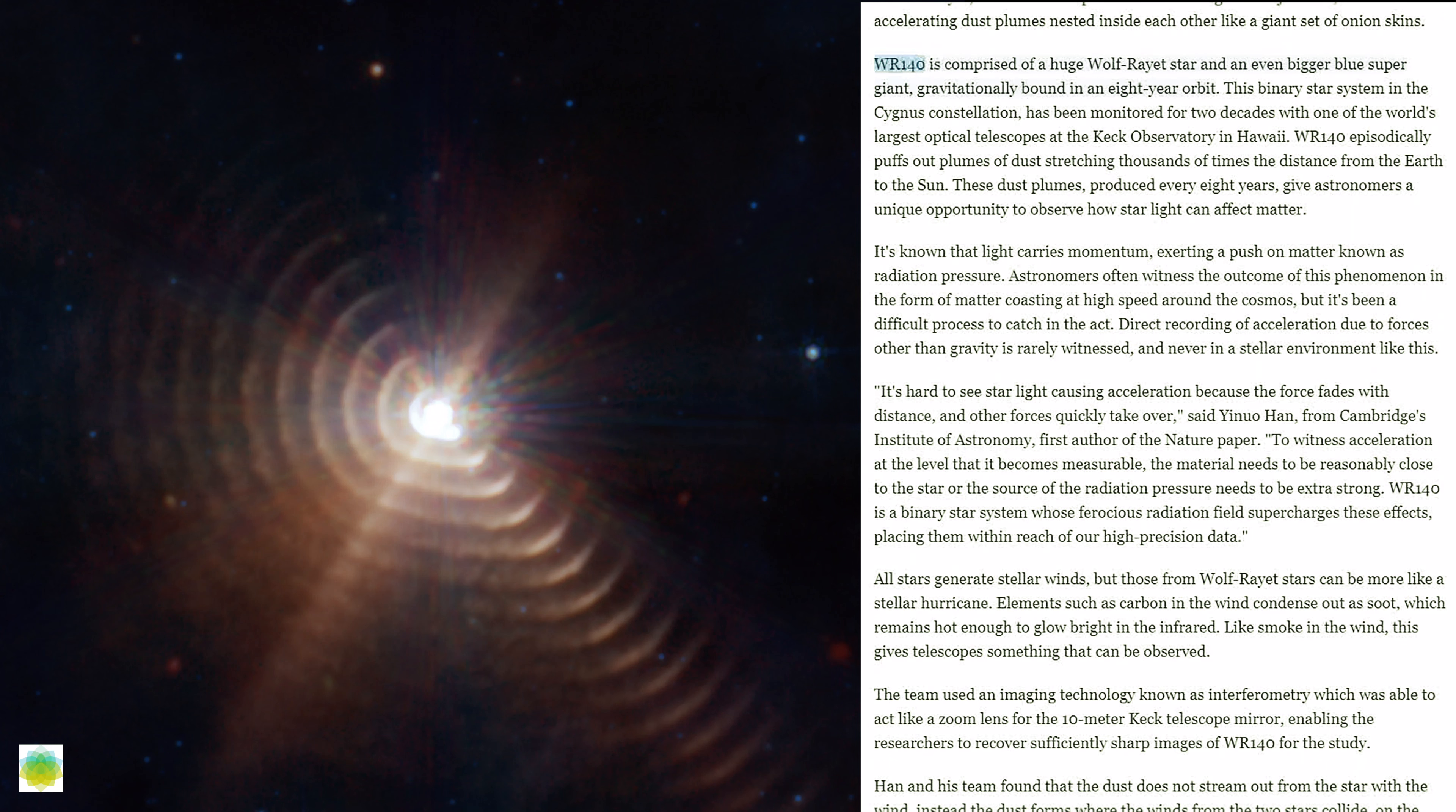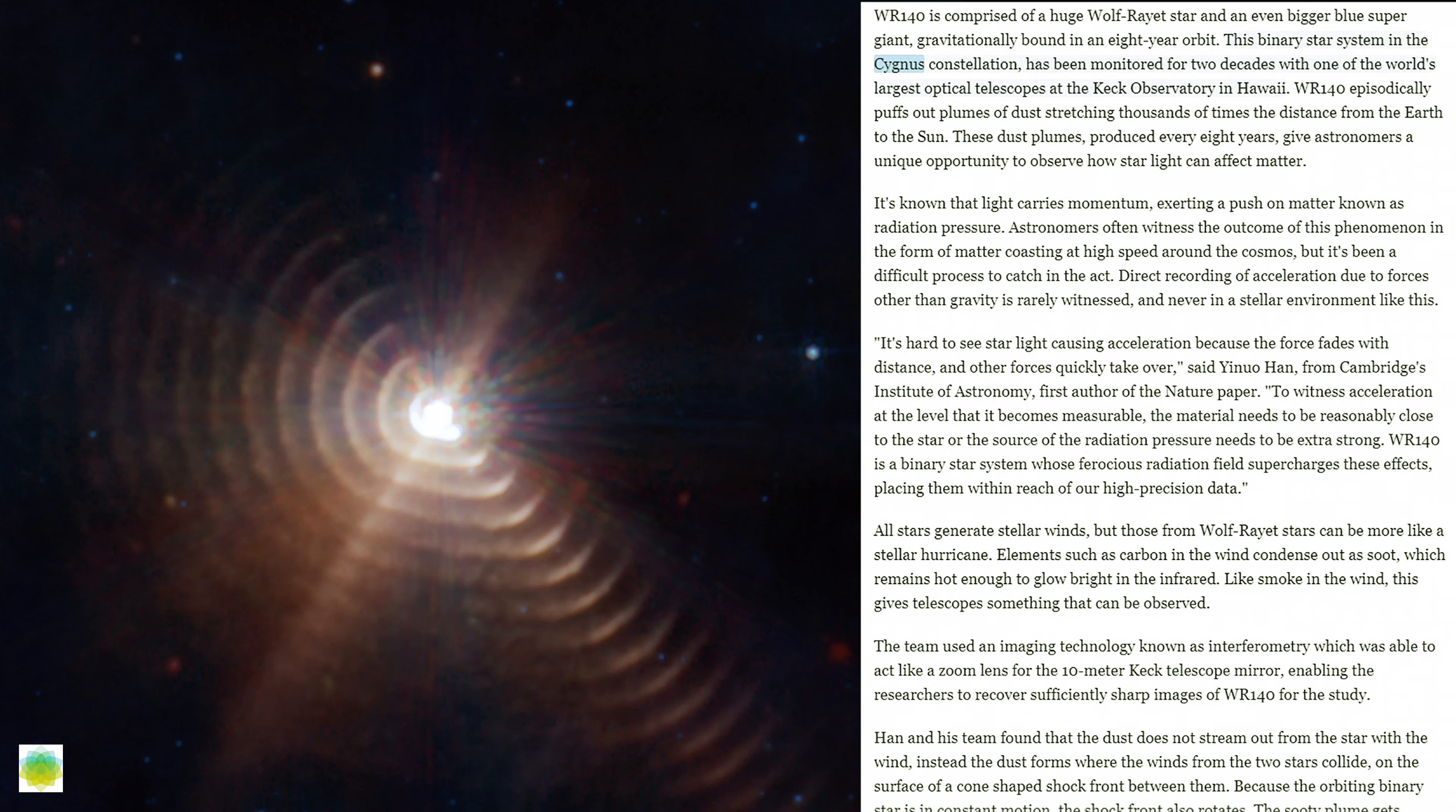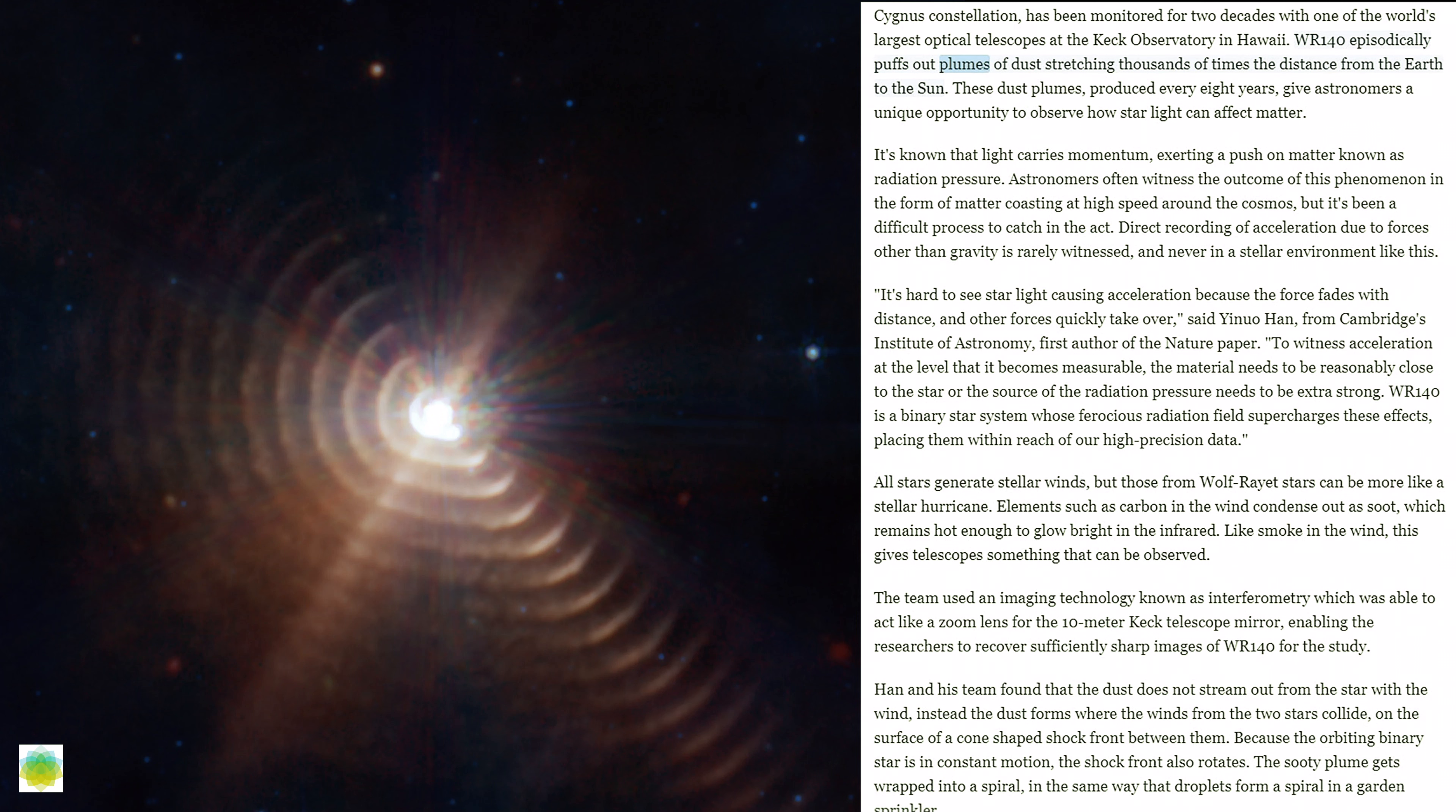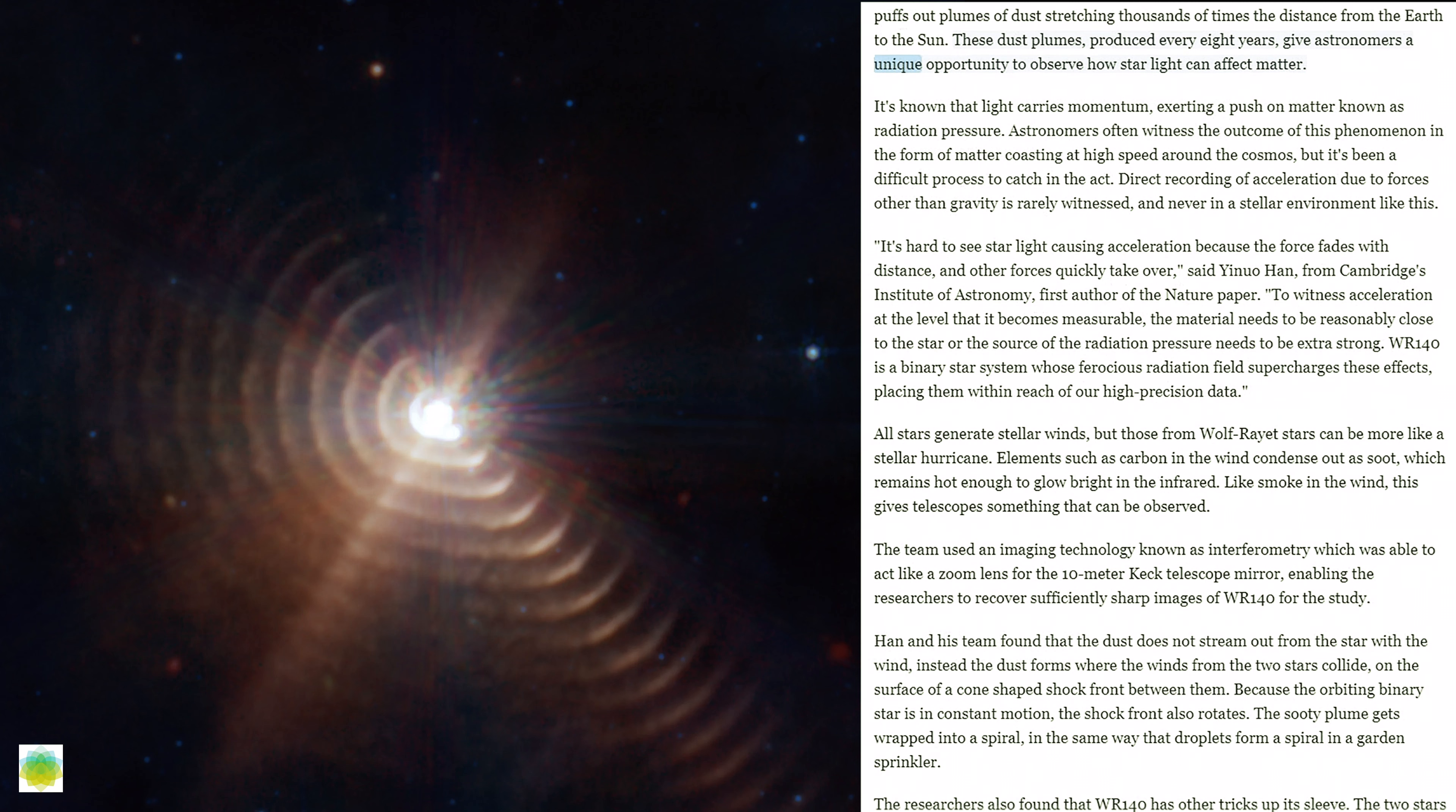WR-140 is comprised of a huge Wolf-Rayet star and an even bigger blue supergiant, gravitationally bound in an eight-year orbit. This binary star system in the Cygnus constellation has been monitored for two decades with one of the world's largest optical telescopes at the Keck Observatory in Hawaii. WR-140 episodically puffs out plumes of dust stretching thousands of times the distance from the Earth to the Sun. These dust plumes produced every eight years give astronomers a unique opportunity to observe how starlight can affect matter.